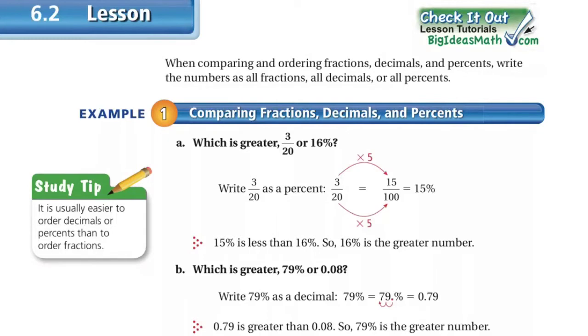Part B: Which is greater, 79% or 0.08? Here they turned them both into decimals, and then it was easy to compare.